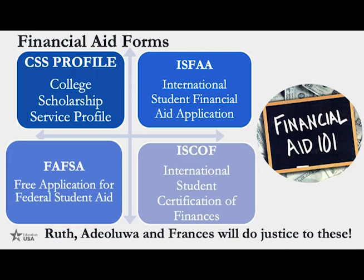The FAFSA is for US citizens, so you don't really need to worry about that unless you're a citizen. Then the ISCOF — International Student Certification of Finances — is a form similar to the ISFAA but different: the ISFAA shows your financial need, while the ISCOF shows your financial ability, certifying the amount of finances you have. They kind of go hand in hand. There will be a separate presentation covering these forms in more detail.